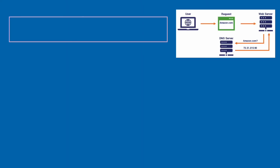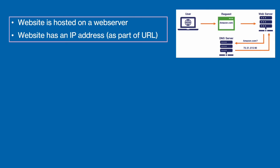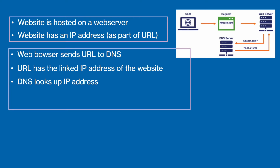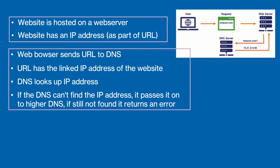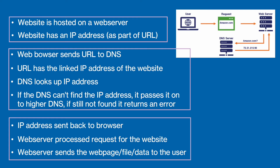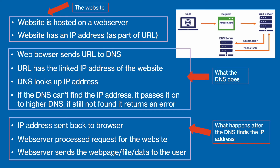To answer this question, let's first deal with the website. The website is hosted on a web server and has an IP address and a URL. Next, let's address what the DNS does with this information. Once the web browser sends the URL to the DNS, it looks up the URL and returns the correct linked IP address. If it can't find it, it sends it to a higher DNS. If the higher DNS still cannot find the IP address, then an error message is returned — this is why you will sometimes get a 404 error if the web page cannot be found. If the DNS does find the IP address, it sends it back to the browser. So the browser is what communicates with the DNS. Once the IP address has been found and returned, the web server processes the request of the website and sends the web page to the user. The answer to this question is really worth noting down as it clearly and simply shows you everything you need to know about the role of the DNS.